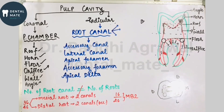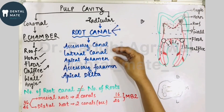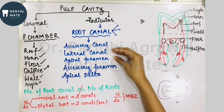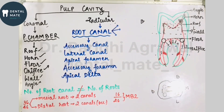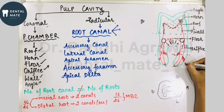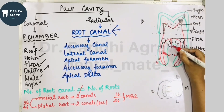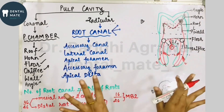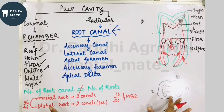All lateral canals are accessory canals, but not all accessory canals are lateral canals. Lateral canals are a type of accessory canal that branch from the lateral surface of the tooth — whether mesial or distal lateral surface. Any branching on the lateral surfaces of the tooth is called a lateral canal.